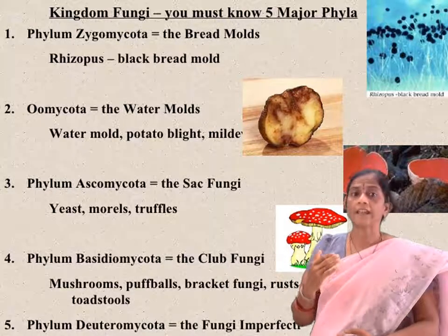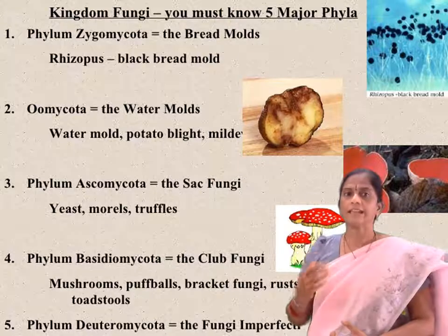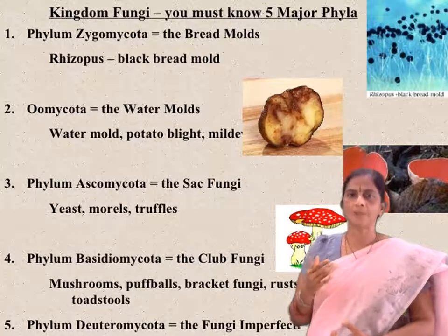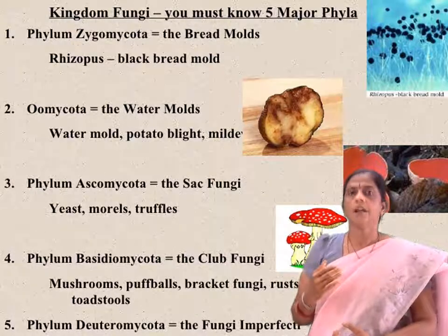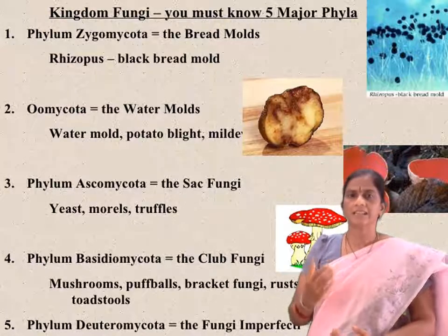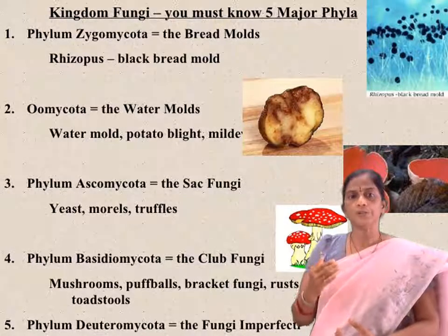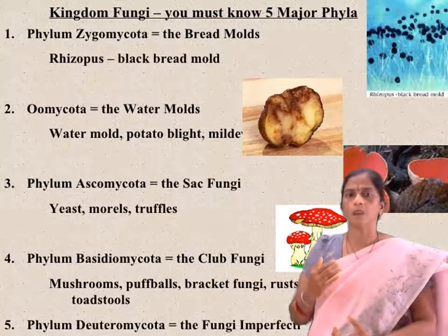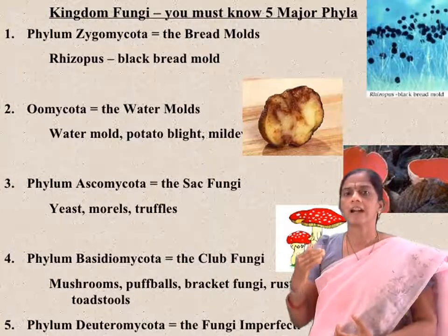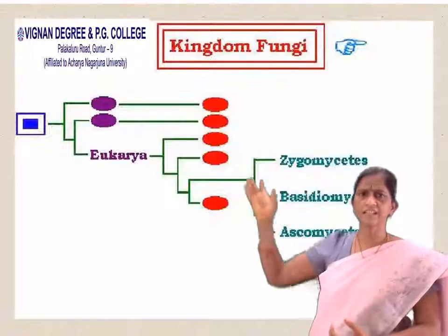Coming to phylum Basidiomycota — the club fungi; example is mushrooms, also known as smut and rust fungi. Phylum Deuteromycota is known as fungi imperfecti.